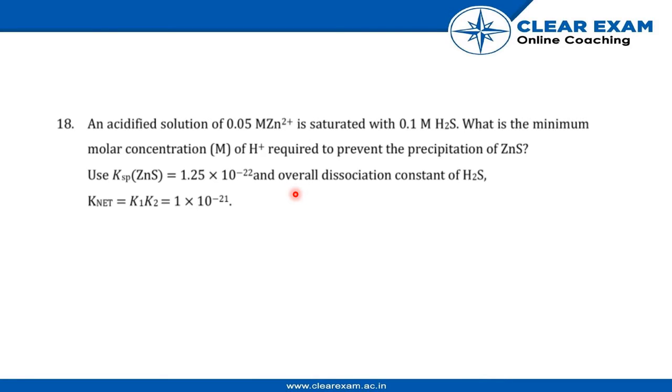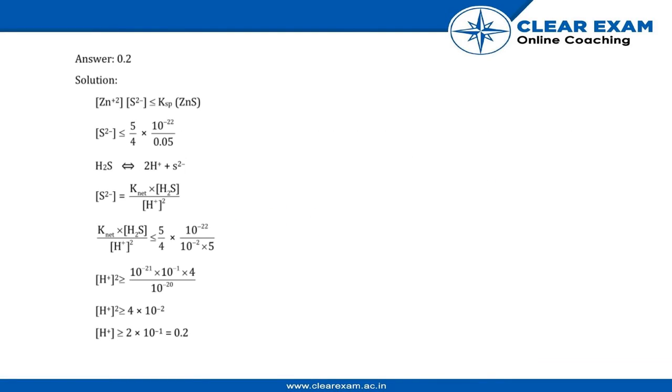dissociation constant of H₂S where Knet = K₁ × K₂ = 1 × 10⁻²¹. So for that, we get a solution: H₂S ⇌ 2H⁺ + S²⁻.